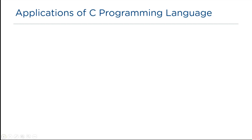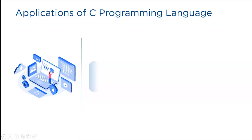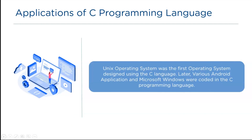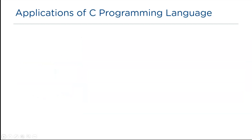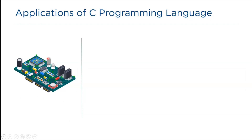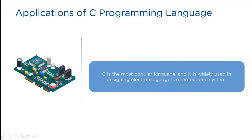Let us look at the first application. C language is used to design operating systems. As discussed earlier, the Unix operating system was the first ever operating system designed entirely using the C language. Later, a wide range of Android and Microsoft Windows applications were designed using C. C is also widely used in designing and developing embedded systems for electronic gadgets, and the software built into the embedded systems is developed using C.